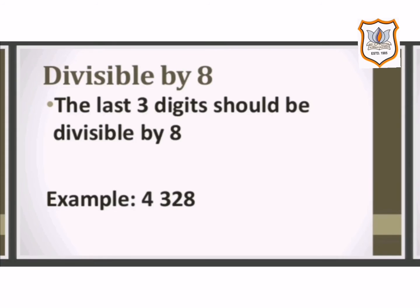The next rule is divisible by 8. A number with 4 or more digits is divisible by 8 only if the number formed by its last 3 digits is divisible by 8. For example, in 4328, the last 3 digits are 328, which is divisible by 8. So this number is divisible by 8.